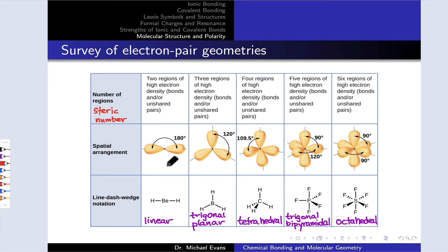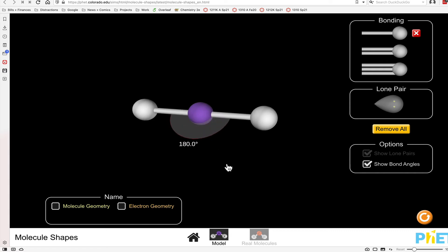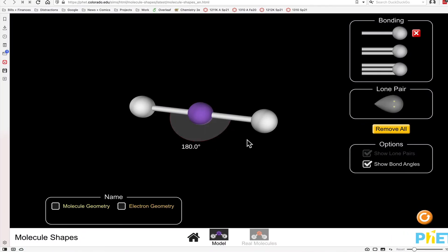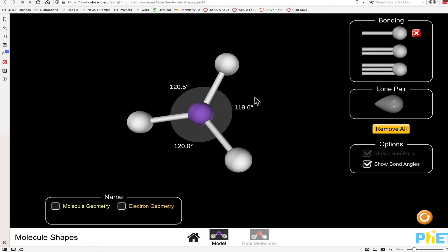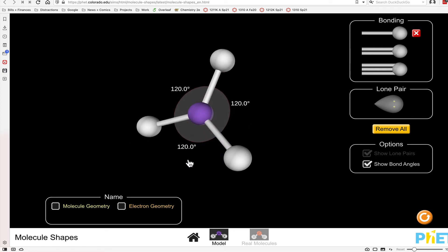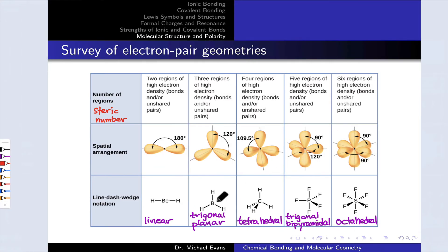Let me pull up an interactive that will allow us to see this in three dimensions. Here's the linear geometry, and we can see that 180 degree bond angle between the two groups attached to the central atom in purple here. When I add a third region of electron density, watch what happens. We spring out and we get something that looks like a triangle with 120 degree bond angles between the three sets of bonds. This is what's known as trigonal planar.